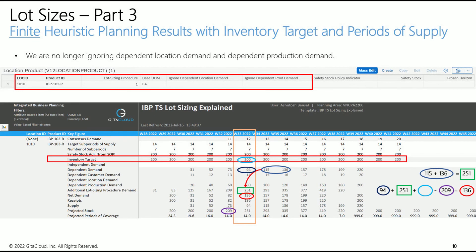Let's focus now on week 33. Additional lot sizing procedure demand is 251 in week 33, which is greater than inventory target of 200. Hence, the net demand calculation runs only with the additional lot sizing procedure demand in week 33, unlike week 30. Dependent demand of 94 is added with additional lot sizing procedure demand of 251. The projected stock of week 29, which is 209 units, is then subtracted from the total demand to generate the net demand of 136.